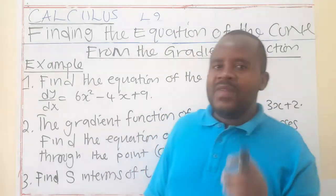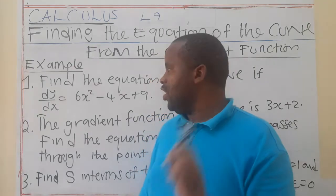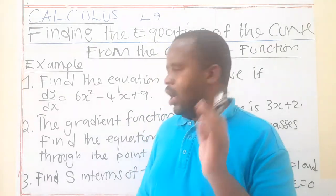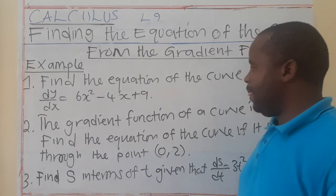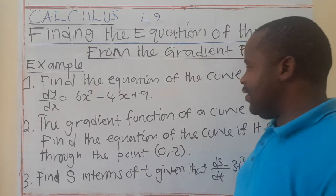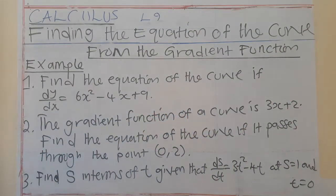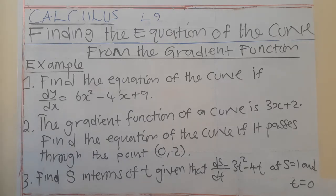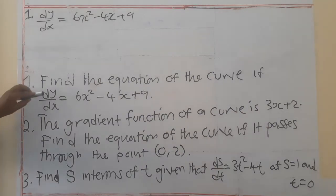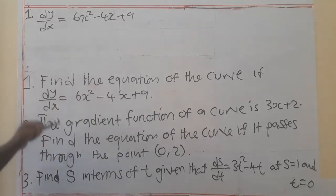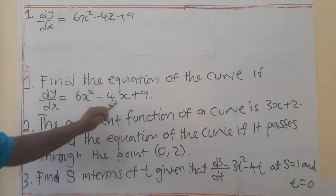For you to find the original equation of a curve, you integrate the gradient function. If you have been given limits, you apply them. Now let's look at the first example: find the equation of a curve if dy/dx is equal to 6x squared minus 4x plus 9.